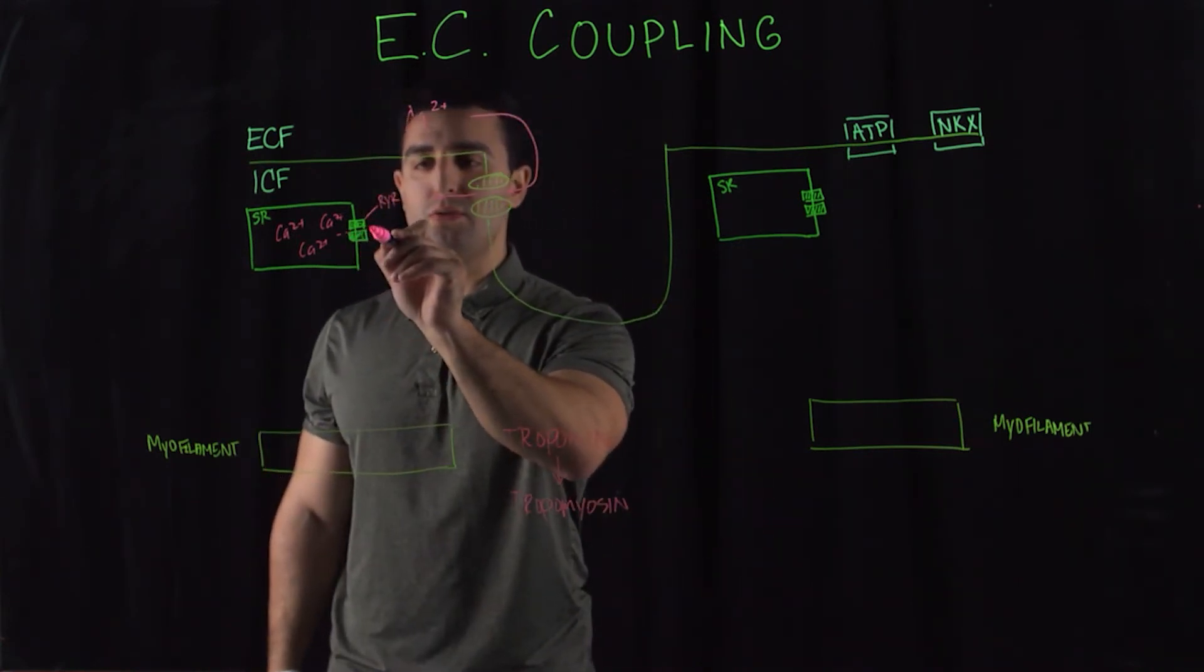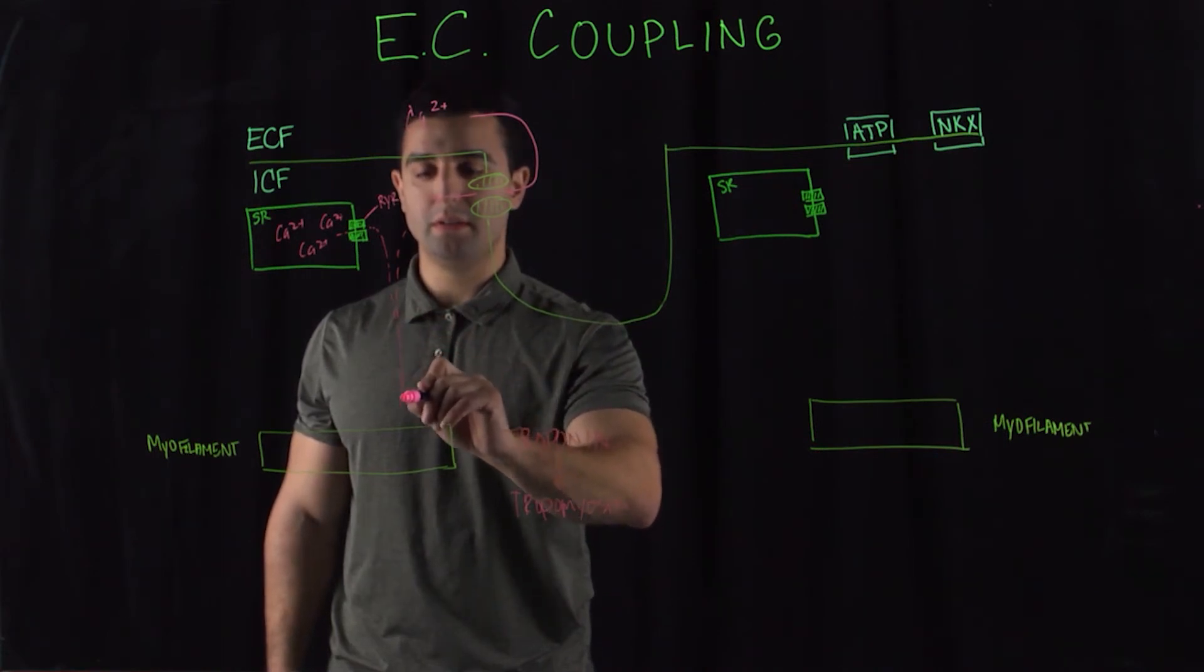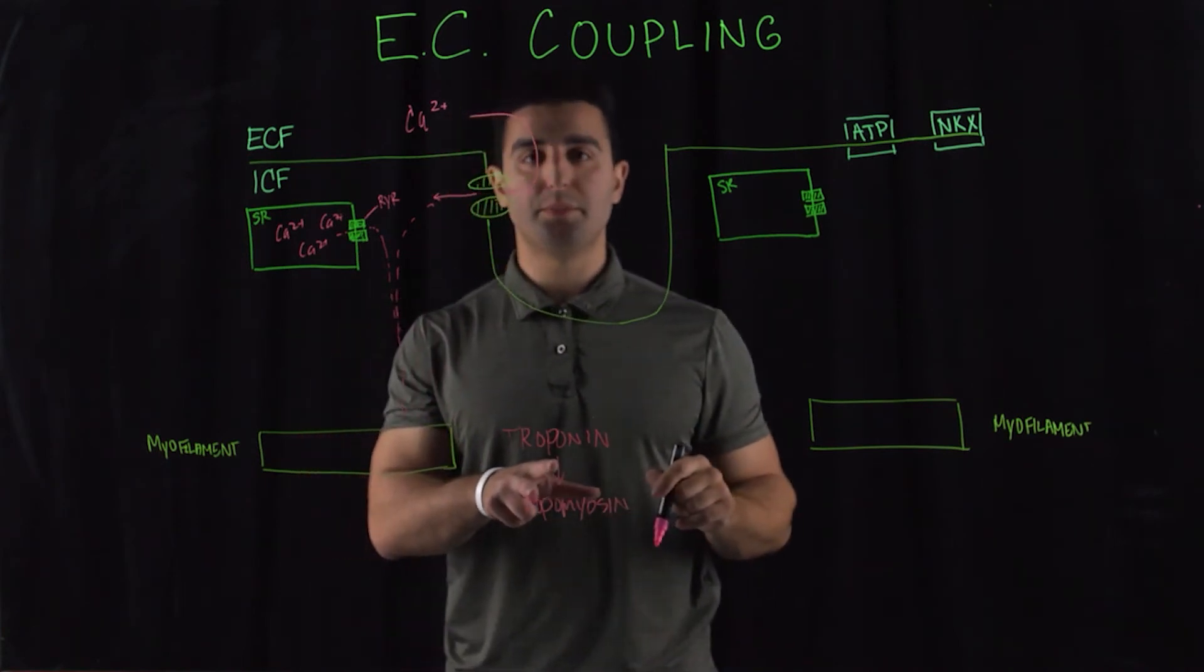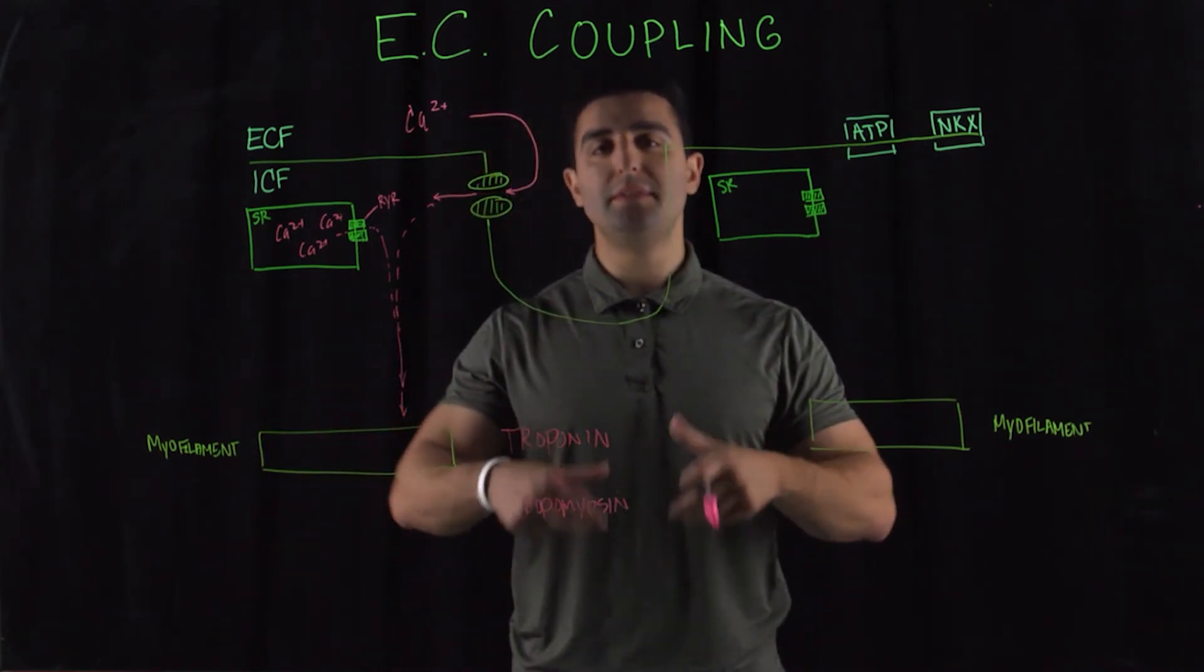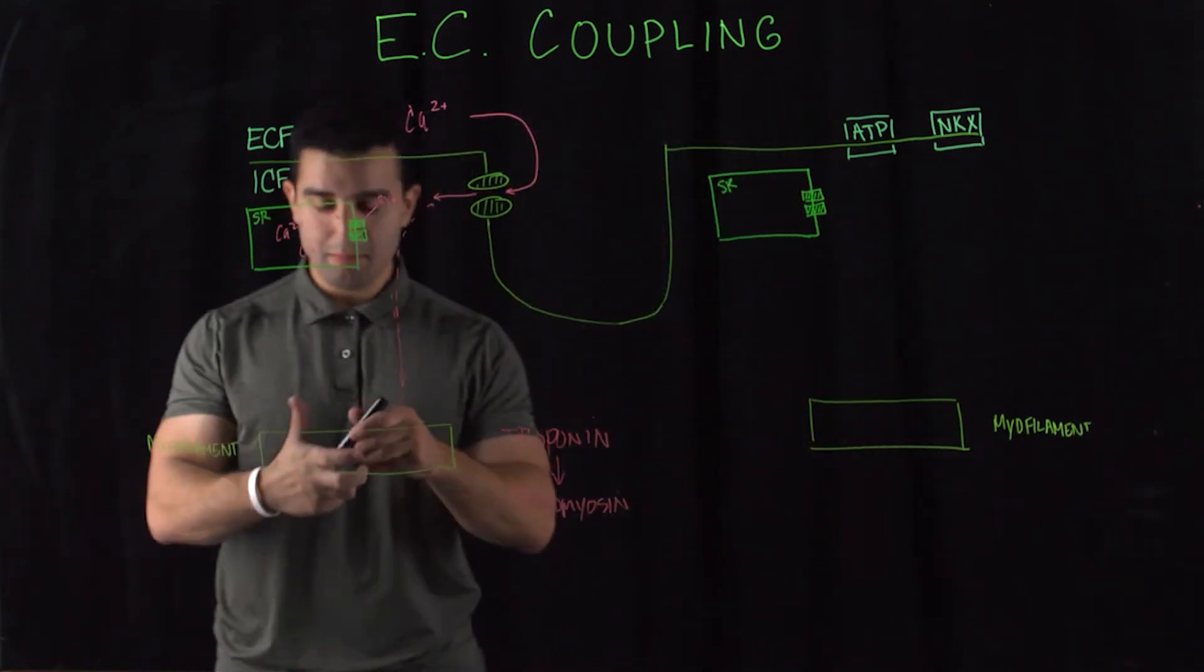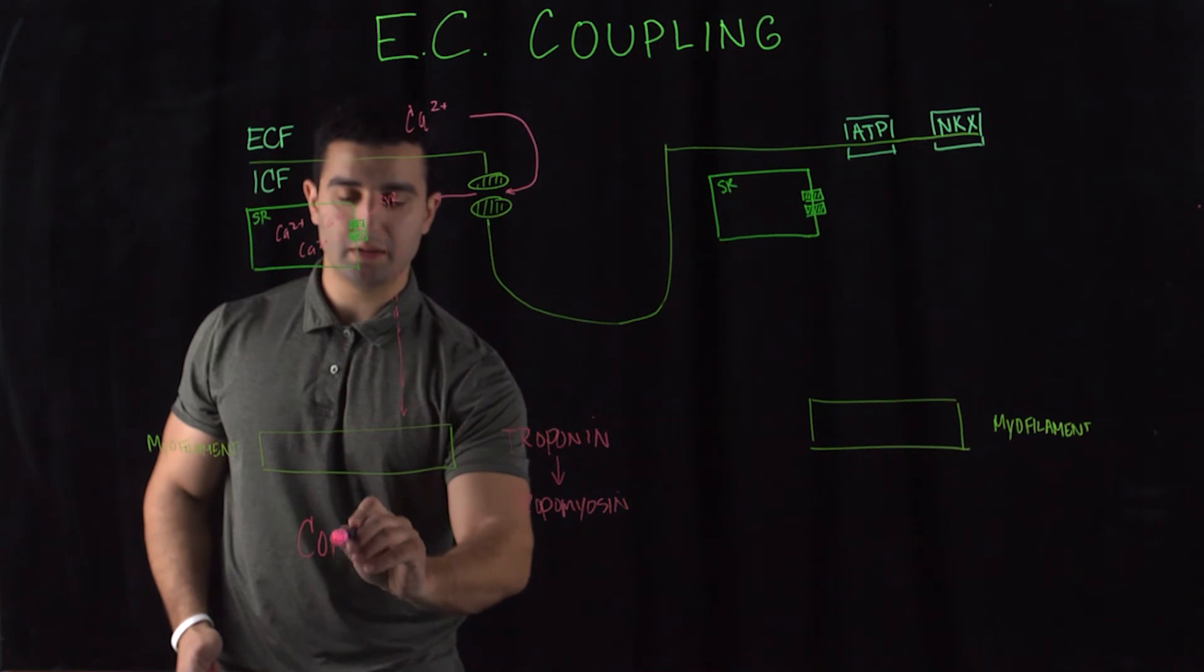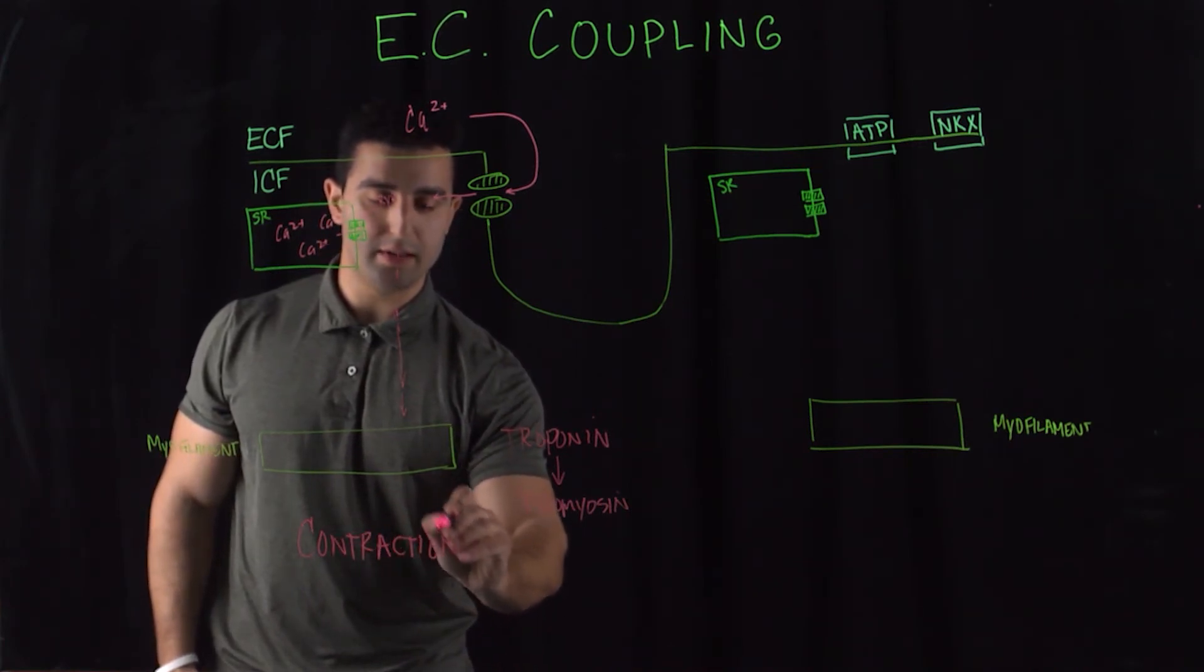And you have this huge influx of intracellular calcium, which eventually binds to the troponin. Troponin becomes active, lifts the myosin head, and the myosin head now can bind to the myofilament. And so this is mainly for contraction of the cardiac muscle.